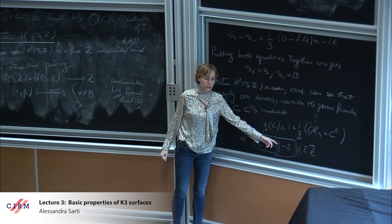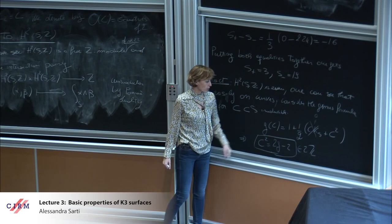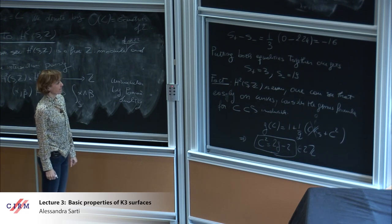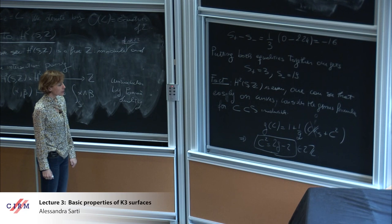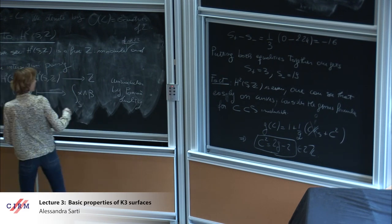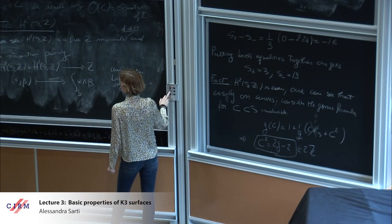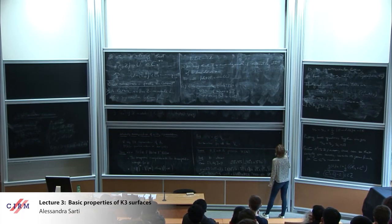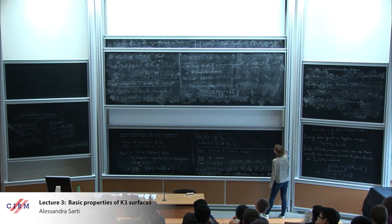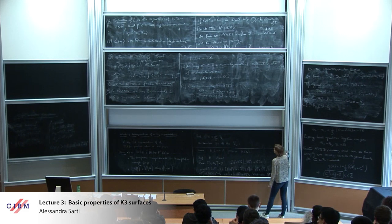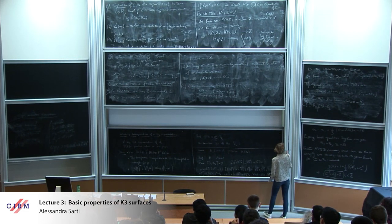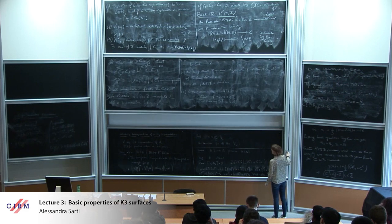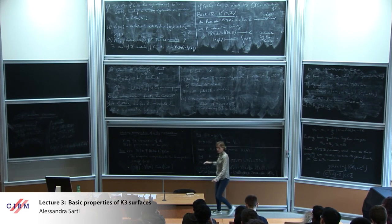This was also an occasion to show you the genus formula — very useful. It gives you the self-intersection of all curves on a K3. For example, if the genus is zero, the self-intersection is minus two, so it's a rational curve with self-intersection -2. So we have an even unimodular lattice of signature (3,19). We use now a result of Milnor about classification of lattices.